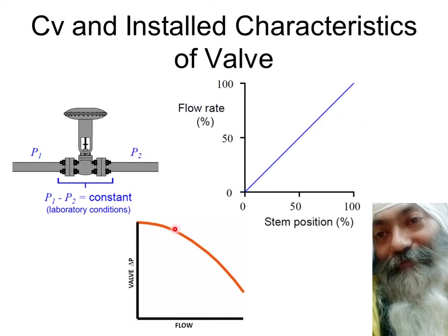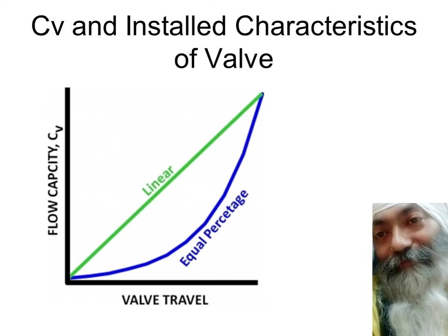So what looks straight in the inherent characteristics — when you practically install it — the installed characteristics will not be the same. Rather, they also start dipping down and down because the delta P is not constant; it is coming down. We don't want this dip — we need to compensate for the delta P decrease. The linear inherent characteristics result in installed characteristics like this, which is what we don't want. That is the main reason we do not go in for linear valves.